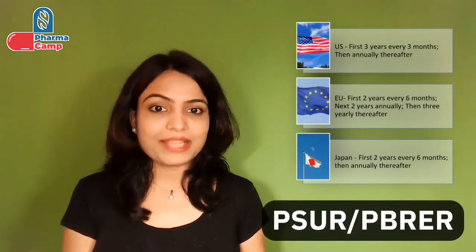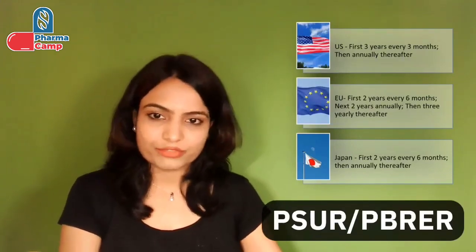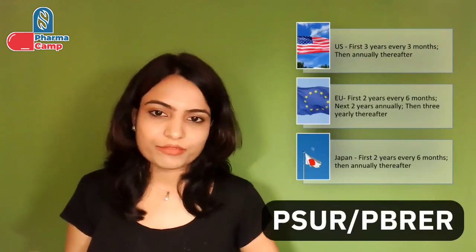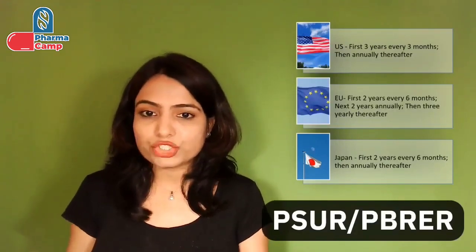Let's see with an example. Different companies have different timelines or frequencies for PBRER submission depending on national regulatory requirements. For example, in the US, for the first three years we need to submit PBRER every three months, and then annually thereafter. In the EU, for the first two years we submit every six months, the next two years annually, and then every three years thereafter. In Japan, for the first two years we submit every six months and then annually. So these time points of three months, six months, and annually are the data lock points for those countries. We have to provide data for these time points in our PBRER submission. This data lock point or DLP is applicable for both DSUR and PSUR or PBRER submissions.